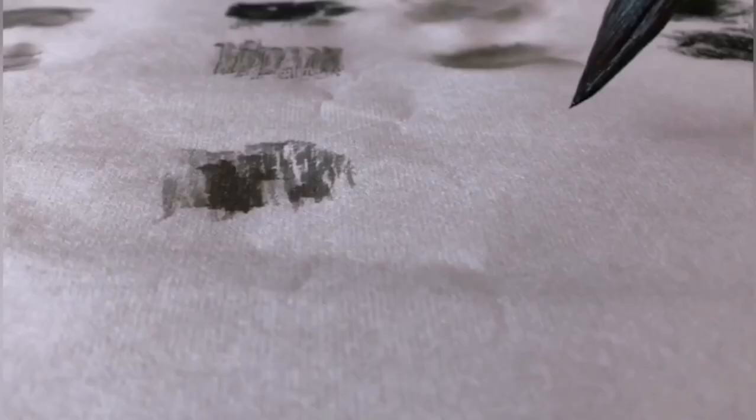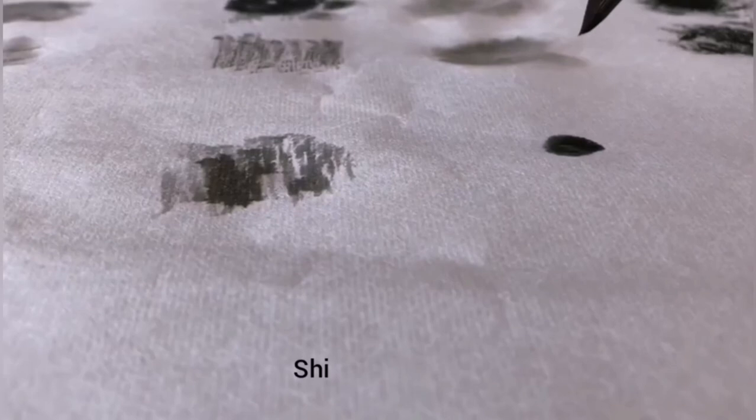To get shi, we dip the brush in water. Gan means the brush is very dry and the ink is very concentrated.